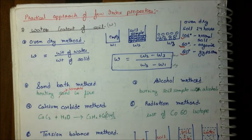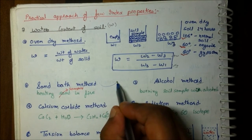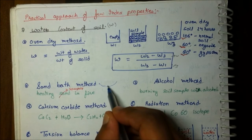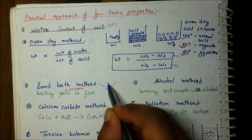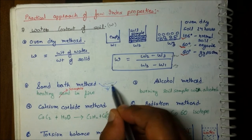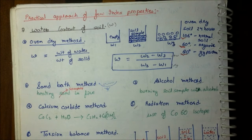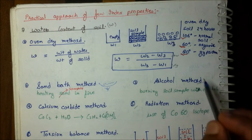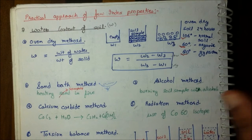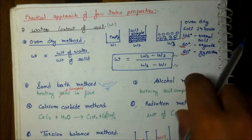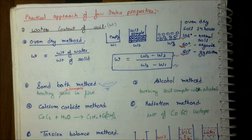The next method is the sand bath method, where we heat the soil sample directly in a container. Because there is no temperature control in this method, it is not considered an accurate method. After that, there is the alcohol method, in which alcohol is added to the soil sample and then directly burned — called flash burning.